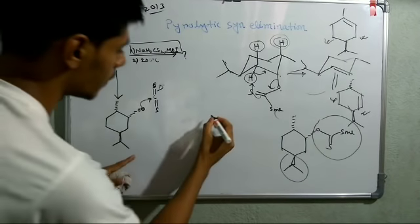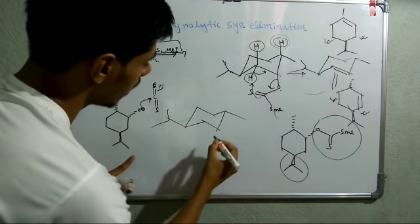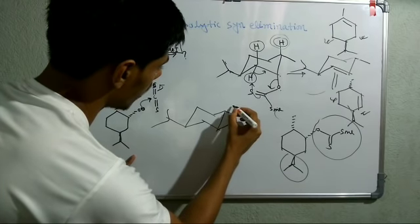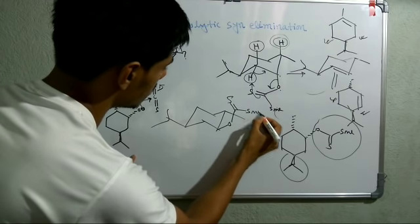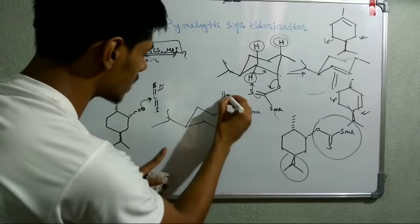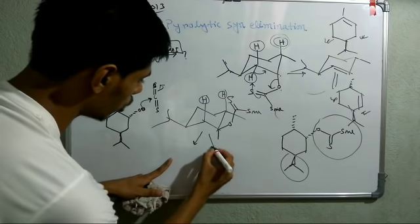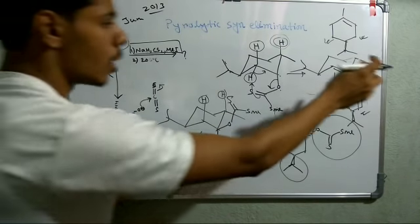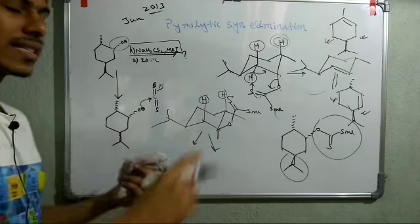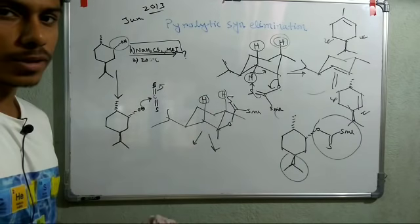Now let's say the configuration of the molecule is slightly changed. Everything remains the same, but the methyl group is now above the plane and the xanthate ester is here — the O is now above the plane rather than below. Now you can see that both hydrogens are syn to this group, so both products are possible. In both cases, the syn cyclic transition state or syn periplanarity of the two groups is achievable.